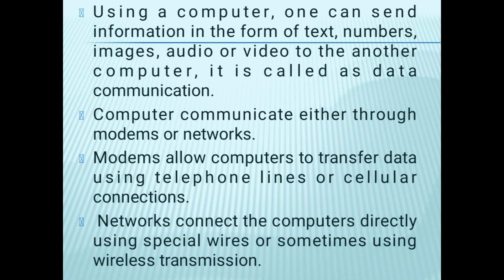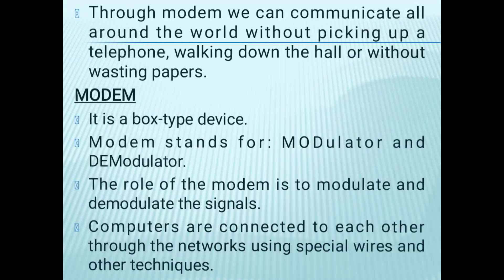Computers communicate either through modems or networks. Modems allow computers to transfer data using telephone lines or cellular connections. Networks connect computers directly using special wires, or sometimes using wireless transmission. Through a modem, we can communicate all around the world.